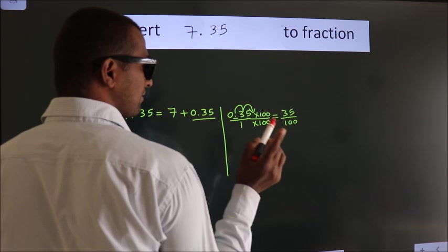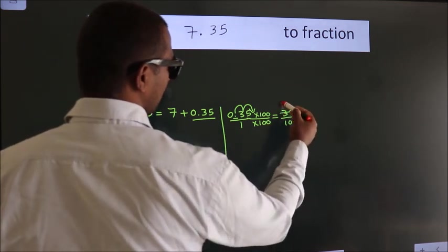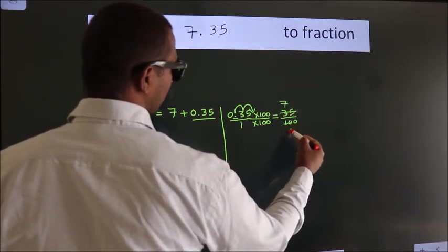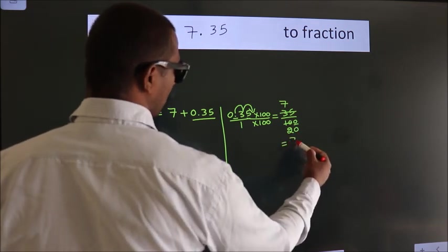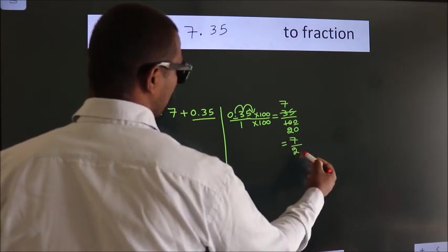Now cancel with 5. 5 into 35 is 7, 5 into 20 is 4, and we bring down the 0. So the fraction we got is 7 by 20.